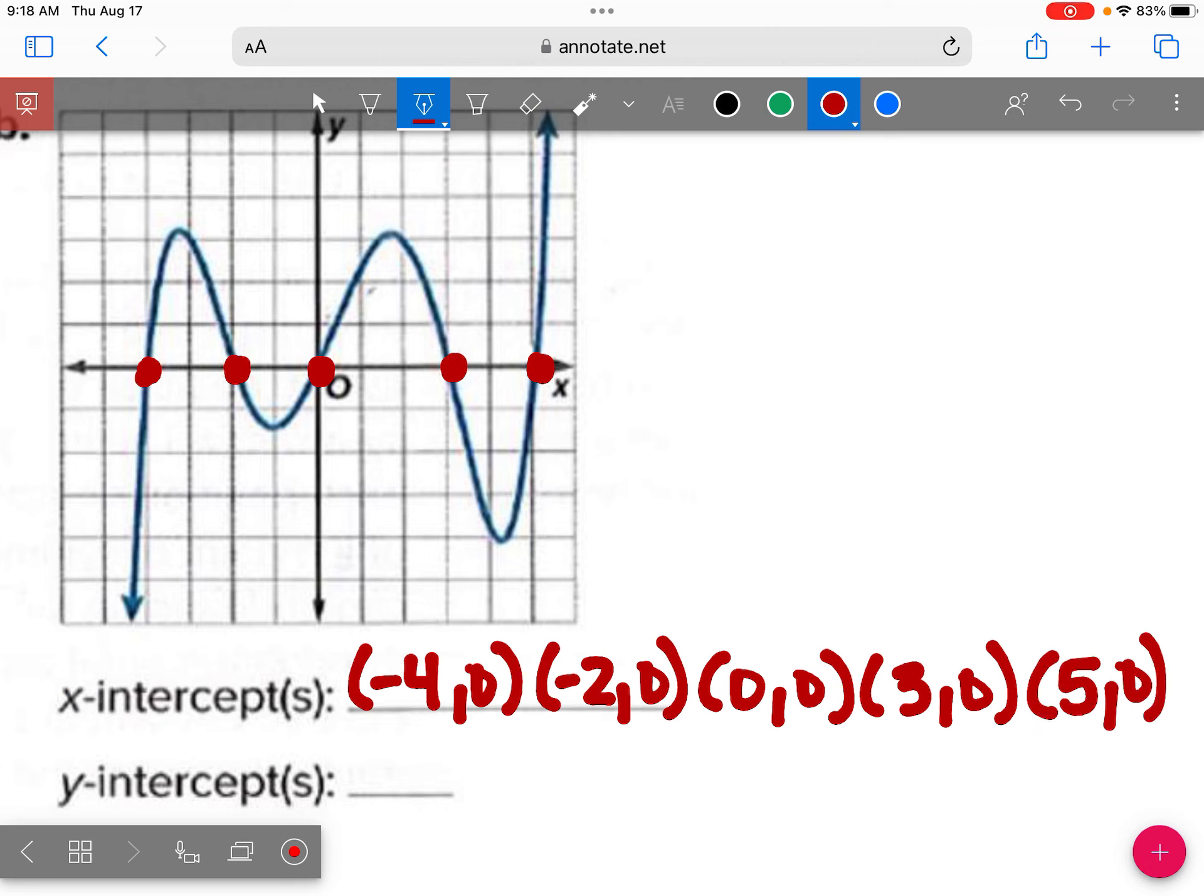Now there's only one y-intercept. Because this is your y-axis. This graph crosses the y-axis only one time, and that's right here. So 0, 0.